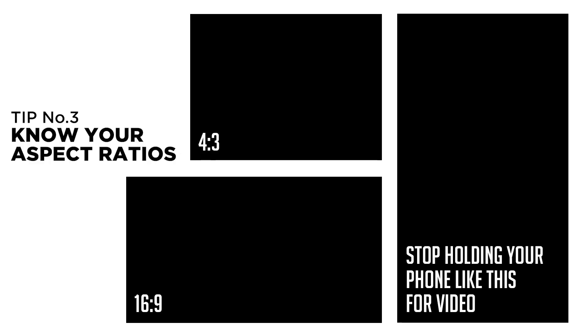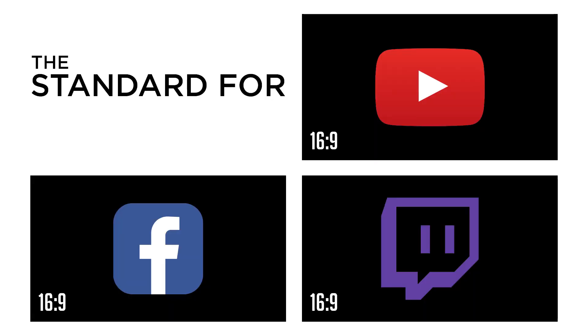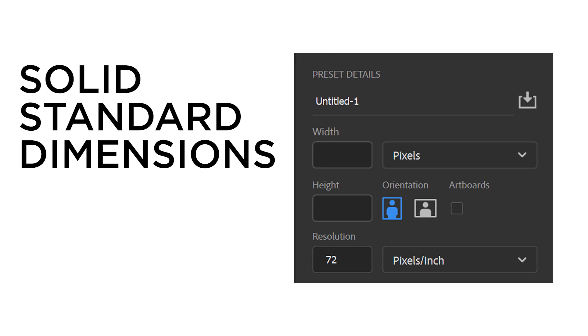Which brings us to tip number three: know your aspect ratios. What the heck is an aspect ratio? In video and video thumbnails, we're dealing with a rectangle. The aspect ratio of a rectangle is its longer side versus its shorter side. The standard for YouTube, Facebook, and Twitch videos is 16 by 9. If the software you're using allows you to specify width and height by pixels, I would recommend 1280 by 720.